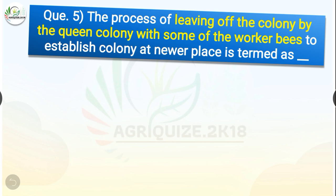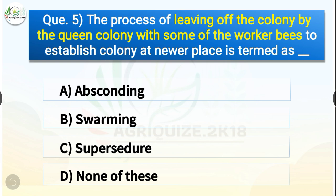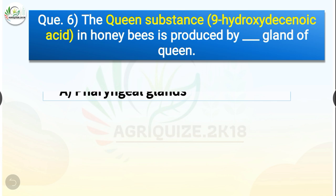Question number five: The process of leaving of the colony by the queen with some of the worker bees to establish a colony at a newer place is termed as dash. The options are absconding, swarming, supersedure, or none of these. The correct answer is option B — swarming. The process of leaving of the colony by the queen with some worker bees to establish a colony at a newer place is termed as swarming.